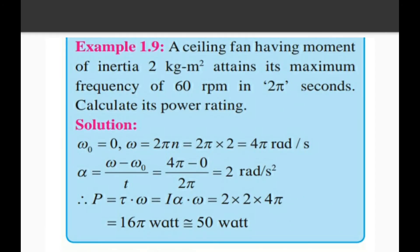Example number 9: A ceiling fan having moment of inertia 2 kg·m² attains its maximum frequency of 60 rpm in 2π seconds. Calculate its power rating. Solution: ω₀ = 0, ω = 2πn = 2π × 2 = 4π rad/s. α = (ω - ω₀)/T = (4π - 0)/(2π) = 2 rad/s².